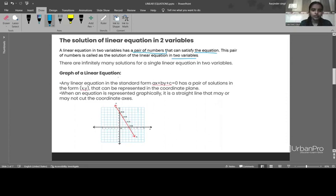Next is the graph of a linear equation. Any linear equation in standard form has pair of solutions in the form x, y that can be represented in the coordinate plane. On a Cartesian plane, we can plot points on x-axis and on y-axis. Suppose these are the solutions of any line. On joining these points by plotting on the graph, we will get a line which is representing here by red line naming pq. That will be a linear equation in two variables.